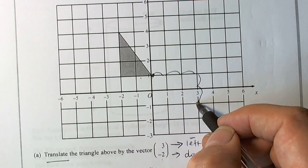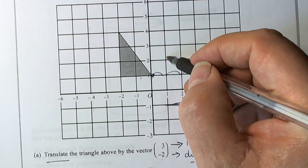Now the whole shape moves with that point. So basically it was 2 across, 3 up.